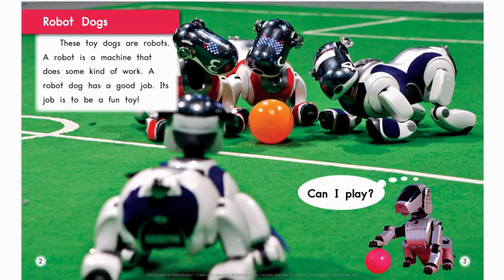Look at the heading 'Robot Dogs.' Remember, the heading tells what the whole section will be about — this section is about a robot dog. A heading is kind of like a title, but it's only for one section of the book. A title is for the whole book, and a heading is the title for just one section, or one part of the book.